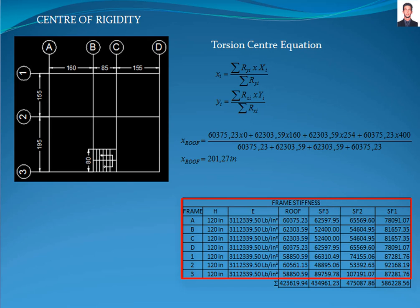For example, for roof story, we use these convenience points and multiply the stiffness of the frame A by the distance in X direction. In this case, it is 0.